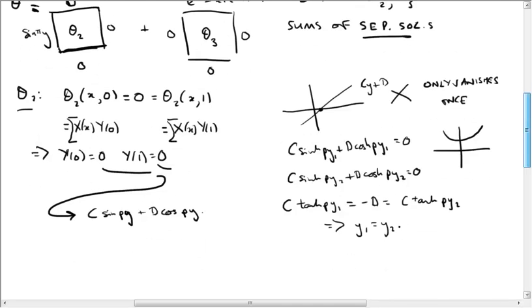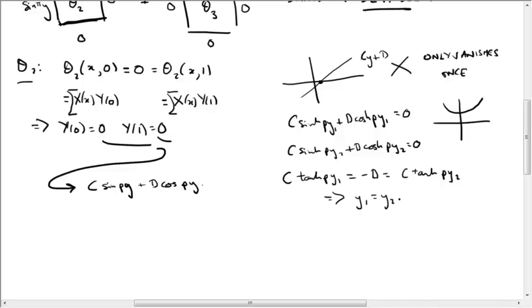Furthermore, we can deduce a bit more. If we stick 0 into here, then c·sin(0) is 0, so Y(0) = 0 + d·cos(0), which is just d. This is supposed to equal 0, so that tells us d = 0. Similarly, at y = 1, we get c·sin(p)·1, and since d vanishes, this is supposed to equal 0 as well. Unless c is going to be 0, this means that sin(p) vanishes, which implies that p = nπ for some integer n.